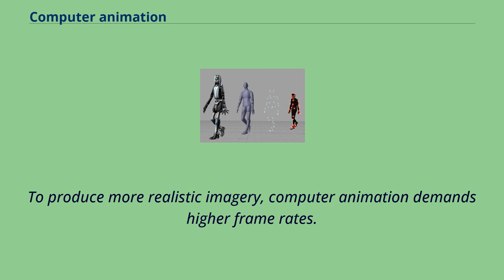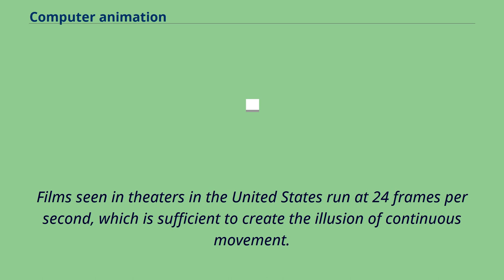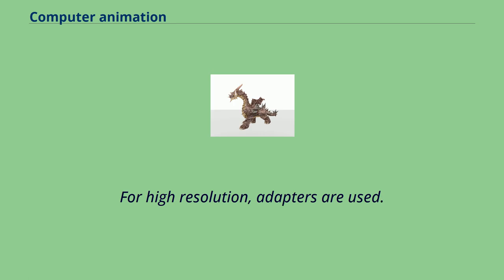To produce more realistic imagery, computer animation demands higher frame rates. Films seen in theaters in the United States run at 24 frames per second, which is sufficient to create the illusion of continuous movement. For high resolution, adapters are used.